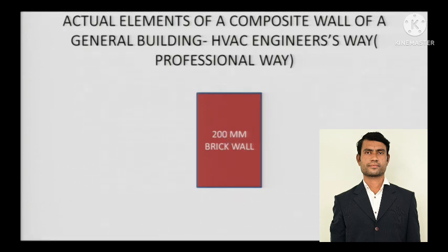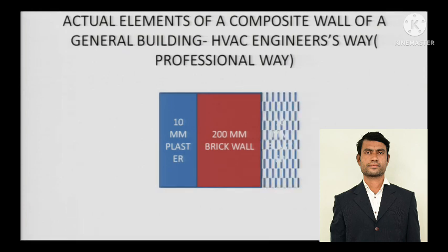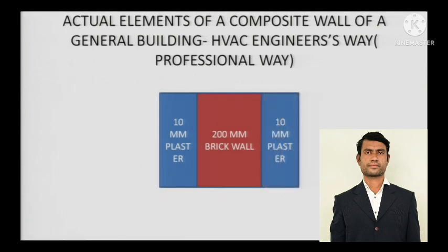It is written: actual elements of a composite wall of a general building — the HVAC engineer's professional way. I have taken 200 mm of brick wall, then 10 mm of inside plaster, and 10 mm of outside plaster. These are the actual elements. If you actually build a wall for a general building, you will have these three components at least. You can also add tiles, insulation, waterproofing, and so on.